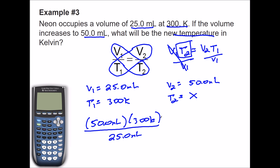Everything is set up correctly. Plugging into the calculator: 50.0 times 300 divided by 25.0 milliliters gives an answer of 600 Kelvin. This is consistent with Charles's Law — as volume goes up, temperature goes up, from 300 to 600 Kelvin. That is the correct answer.